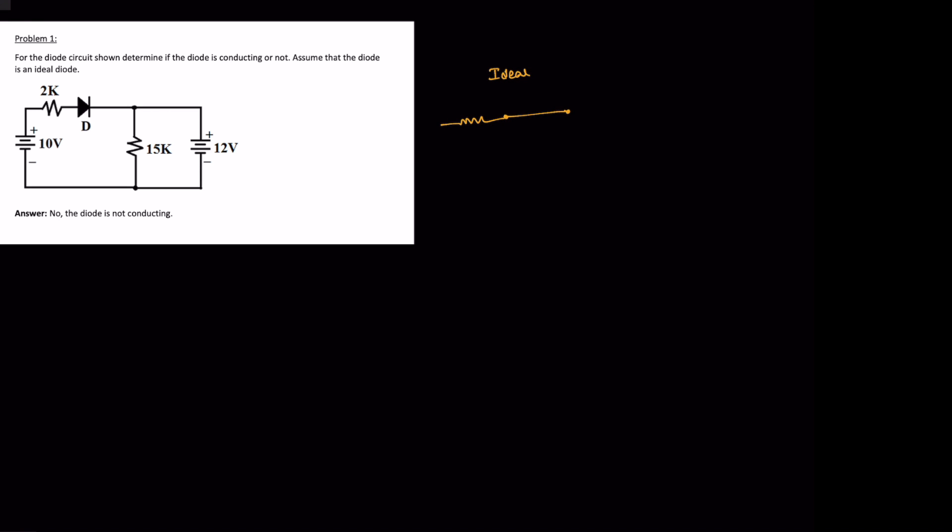Like this, so here 10 volt voltage source is there and two kilo ohm resistor is there, and there is a 15 kilo ohm resistor connected like this, and across 15 kilo ohm resistor directly one 12 volt source is connected.